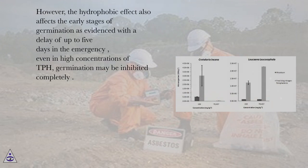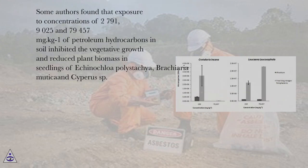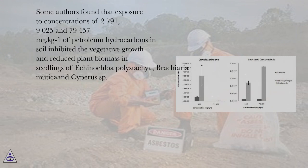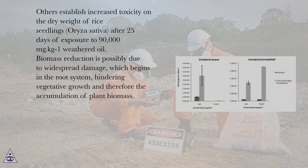However, the hydrophobic effect also affects the early stages of germination, as evidenced with a delay of up to five days in emergence, even at high concentrations of TPH. Germination may be inhibited completely. Some authors found that exposure to concentrations of 2,791, 9,025, and 79,457 mg·kg⁻¹ of petroleum hydrocarbons in soil inhibited vegetative growth and reduced plant biomass in seedlings of Echinochloa polystachya, Brachiaria mutica, and Cyperus sp. Others established increased toxicity on the dry weight of rice seedlings (Oryza sativa) after 25 days of exposure to 90,000 mg·kg⁻¹ weathered oil.